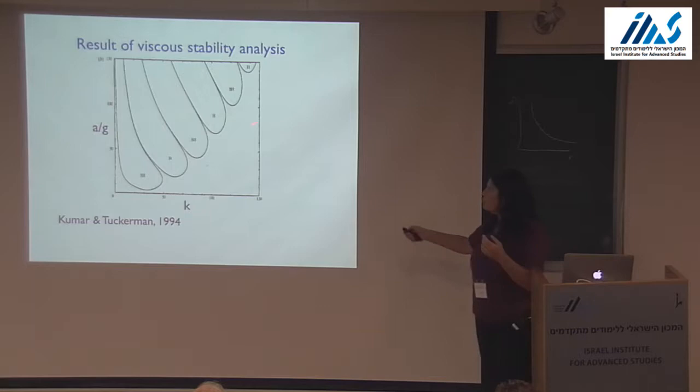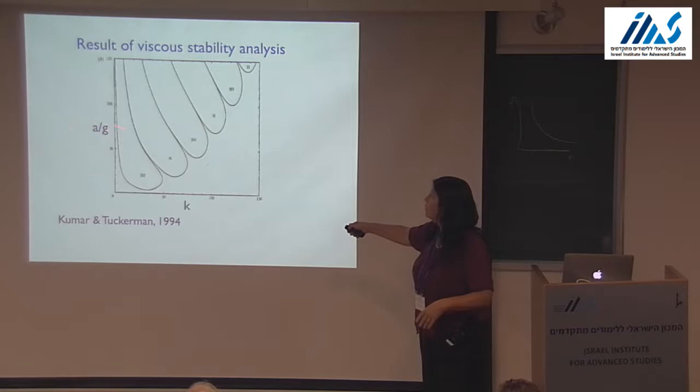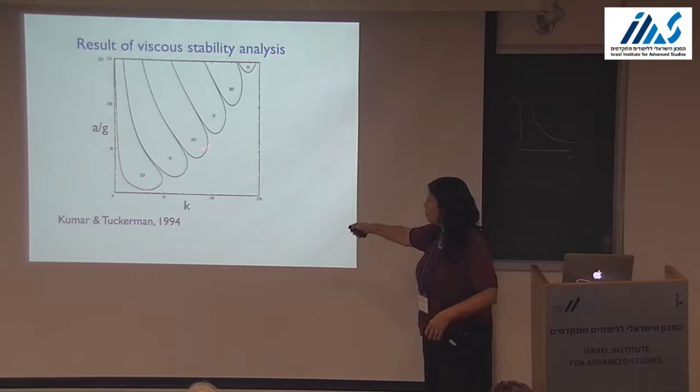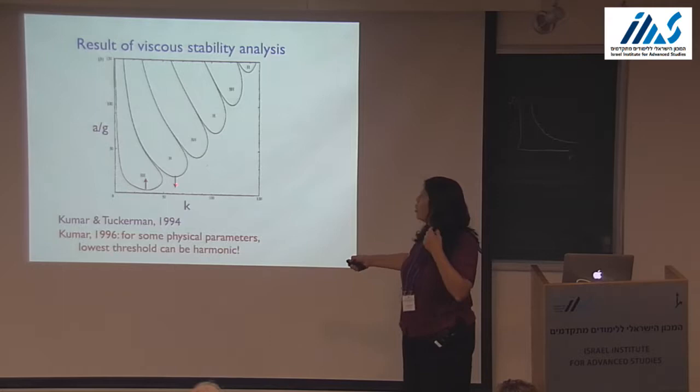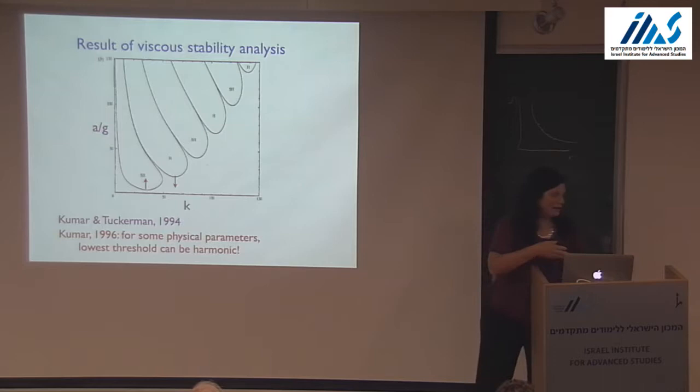Here are the tongues as a function of spatial wave number — you have the forcing amplitude A at which you first see Faraday waves with that wave number appearing. That was published in 1994. One of the first significant results was by Kumar in 1996, who found that for some parameters, you could actually have harmonic response at a lower threshold than subharmonic.